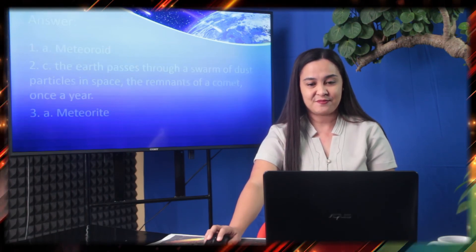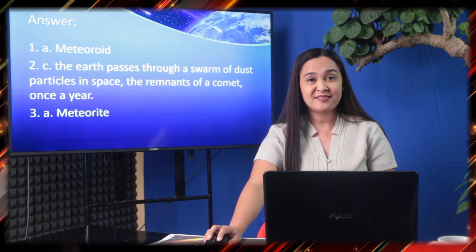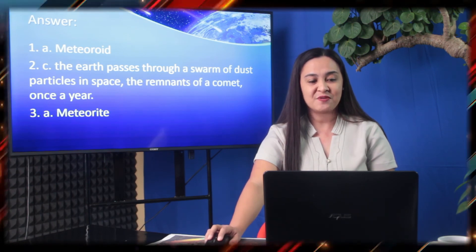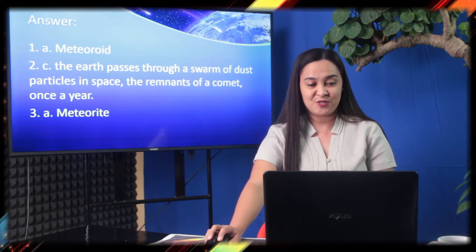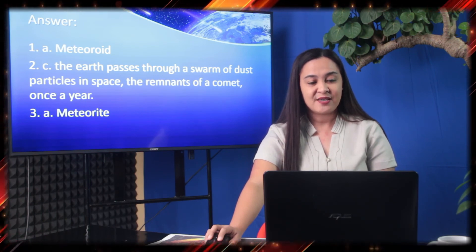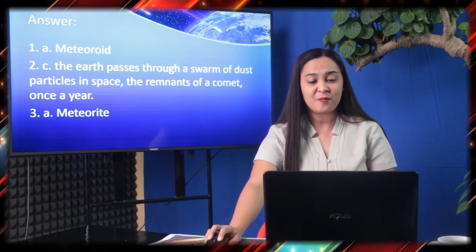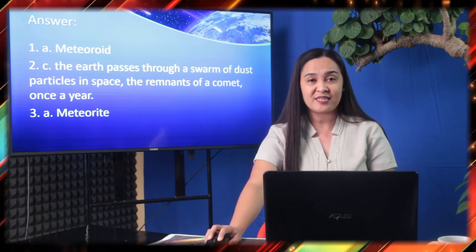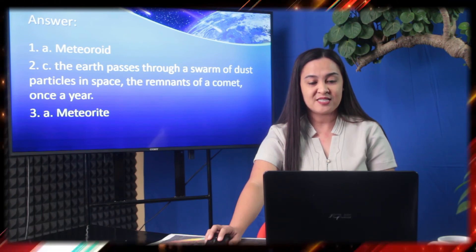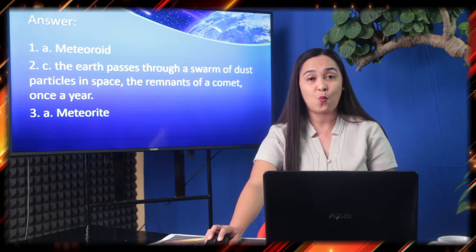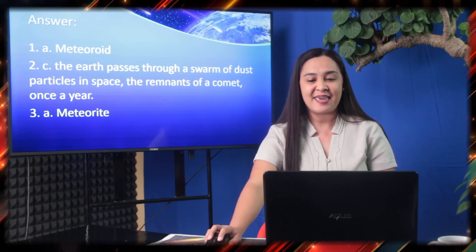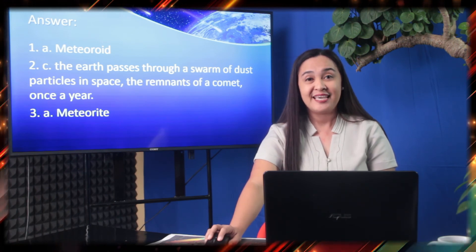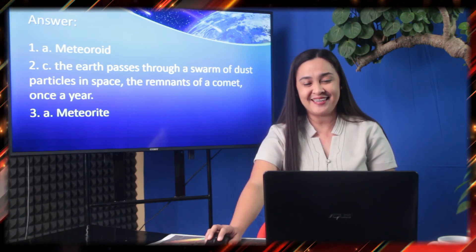Let's reveal our answers. For number 1, the correct answer is A. Meteoroid. For number 2, the correct answer is C — the Earth passes through a swarm of dust, particles, and space remnants of a comet, once a year. And number 3, A. Meteorite. Did you get all the items correctly? Good job, students!